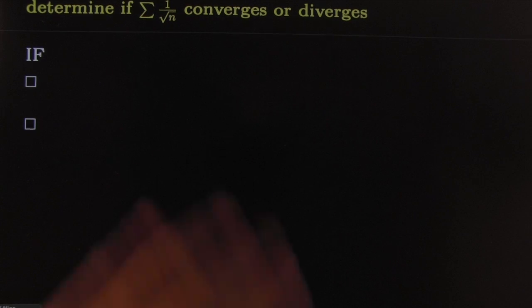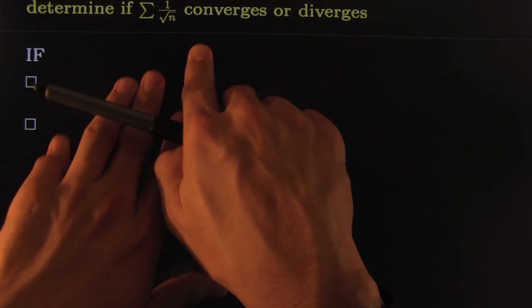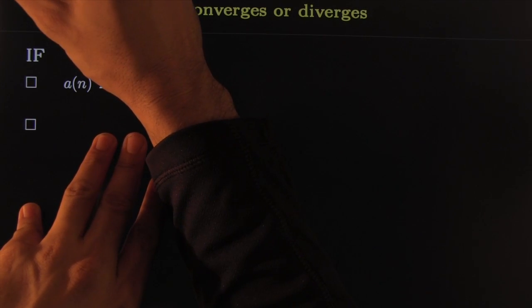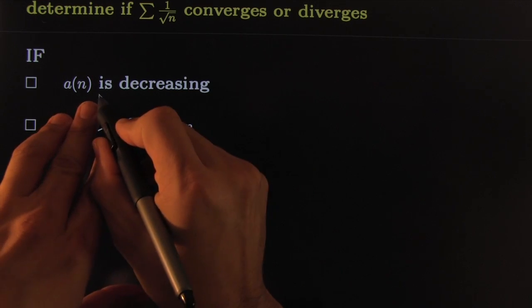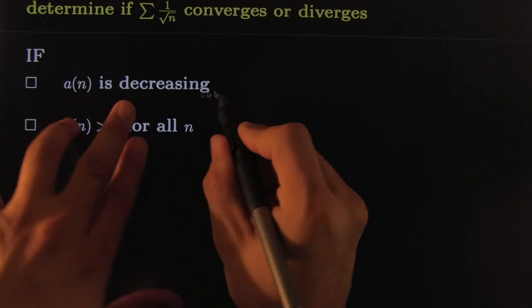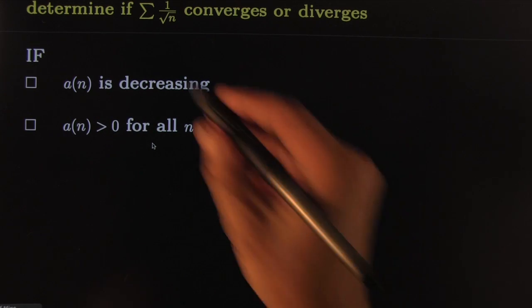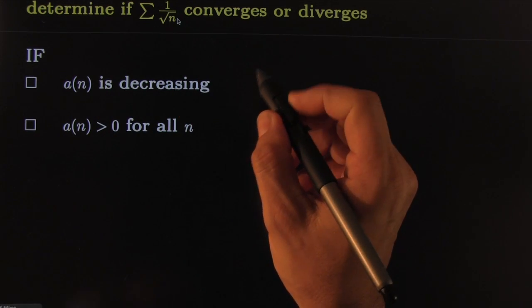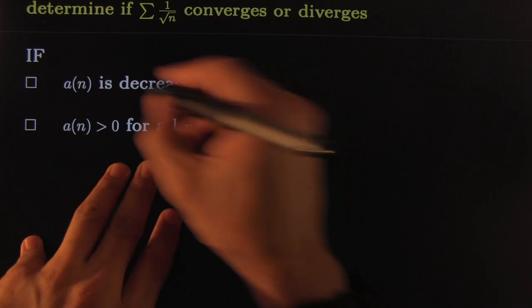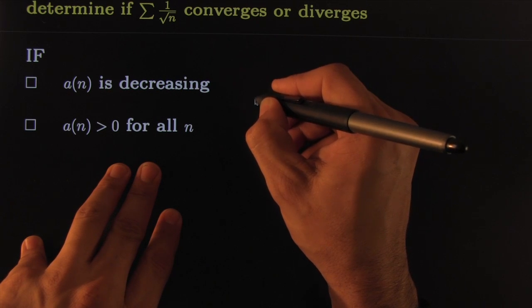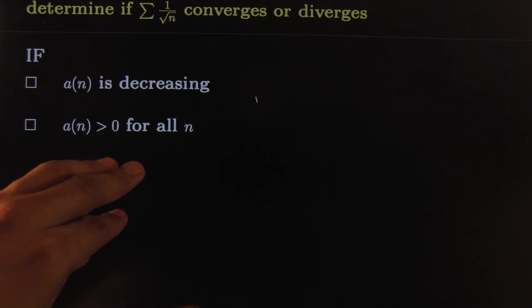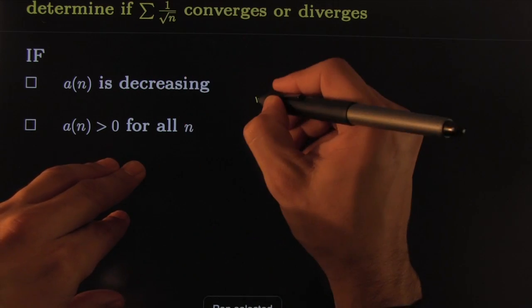All right, we continue to practice our integral test. The integral test says if you check a couple things: first of all we check that your sequence is decreasing, your sequence is positive, then that links it together with the integral version of a sum. So first we check this decreasing. Of course it is decreasing, and it's even silly for me to write anything, but...